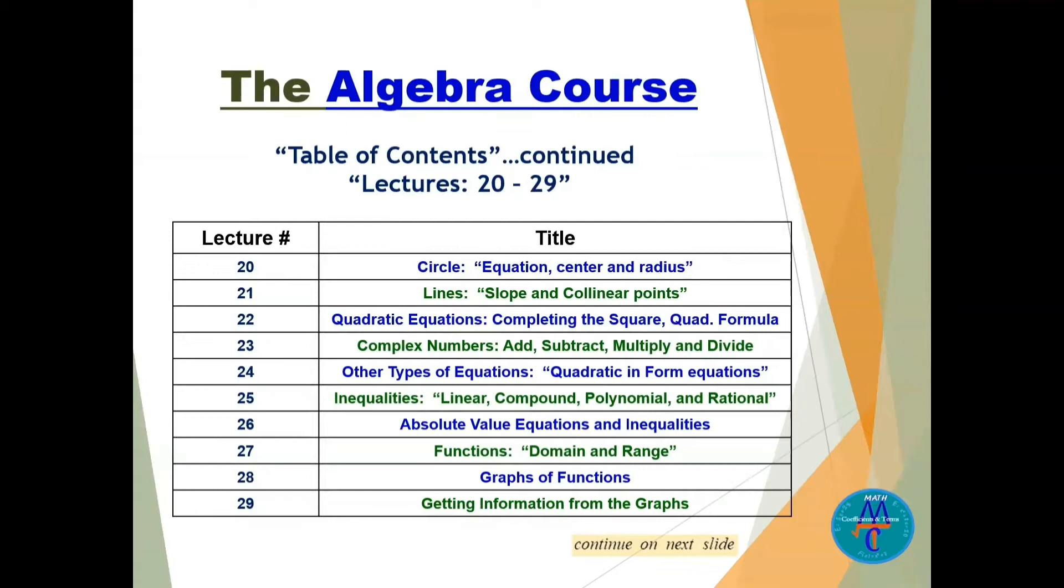This is lectures 20 to 29. Let's say you need slope and collinear points, find the equation of a line, this is lecture number 21. Complex numbers—you add them, subtract them, multiply them, and divide them—this is lecture number 23. If you need functions, how to find the domain and the range, this is lecture number 27.